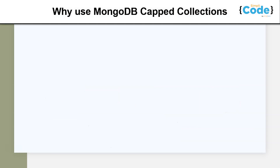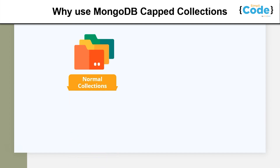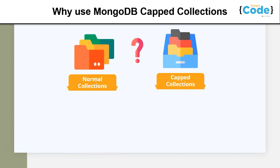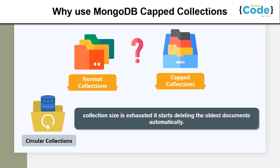Let us understand why we use MongoDB capped collections and how they differ from normal collections. In comparison to normal collections, capped collections are created in advance and are only of fixed size, whereas normal collections are created dynamically and automatically grow in size to fit the extra data. Capped collections are designed to consume less space under a rotating model — once allocated space is full, it will start writing from older documents again. That is why it is called a circular buffer collection: whenever the collection size is exhausted, it starts deleting old documents automatically without any explicit commands.